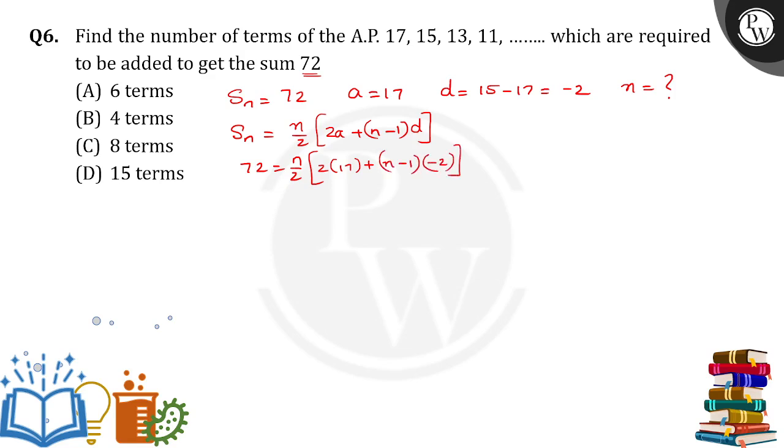Multiplying with 2, 144 equals n into 34 minus 2n plus 2. So 144 equals n into 36 minus 2n squared.